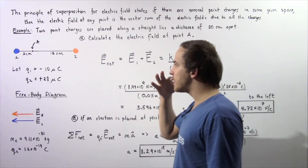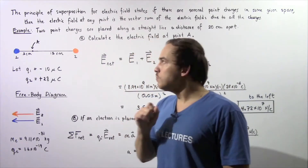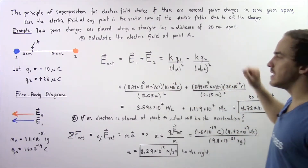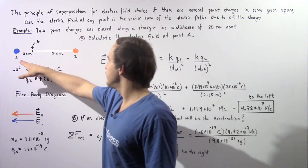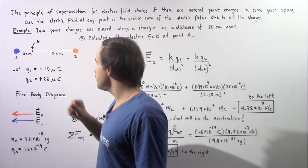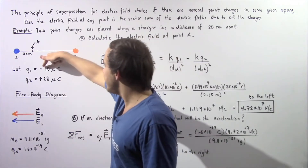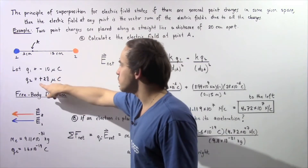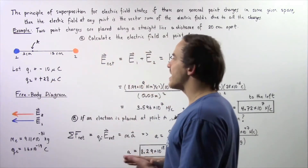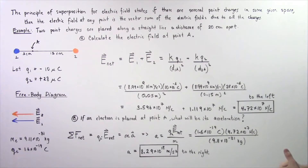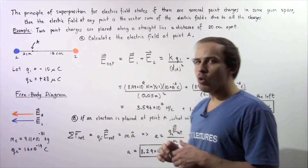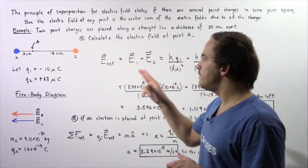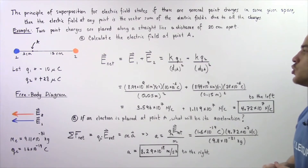We're going to apply this principle in this example. Two point charges are placed along a straight line, a distance of 20 centimeters apart as shown in the diagram. We have stationary point charge one with a charge of negative 10 micro coulombs, and stationary point charge two with a charge of positive 28 micro coulombs. In part A, calculate the electric field at point A, which is 5 centimeters from point charge one and 15 centimeters from point charge two.